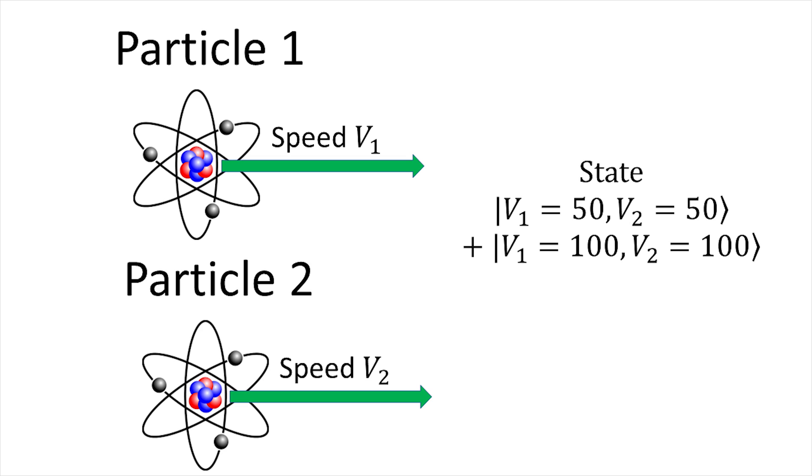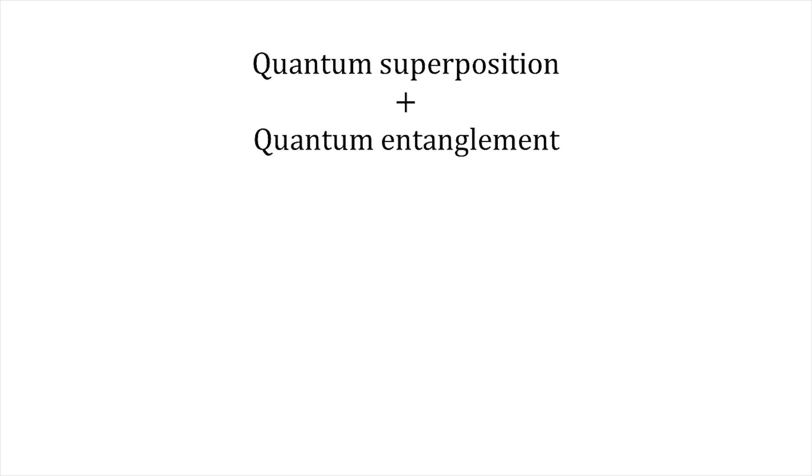But now, let's imagine I have two particles, and I note their speed v1 and v2, and they are in this state. If I measure the speed of particle 1, and I find 50, I'm sure that the speed of particle 2 will also be 50. This is known as quantum entanglement. These are the two properties used to make a quantum computer.